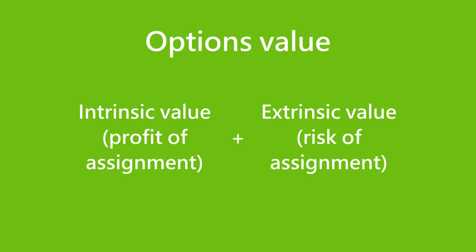The extrinsic value measures the risk of assignment. The extrinsic value is high when the market price is close to the strike price, when IV is high, or when the time to expiration date is long.